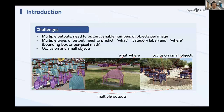Why is object detection challenging? Detection models need to predict multiple outputs — there are various numbers of objects in different images, and multiple types of outputs. You need to predict what and where, and for segmentation you need to precisely segment each pixel per instance. There are also many occlusions and small objects in images that need to be detected accurately.